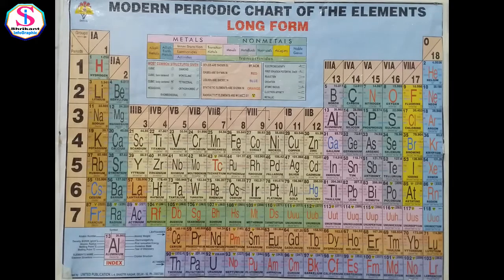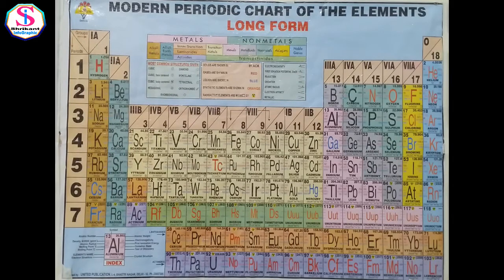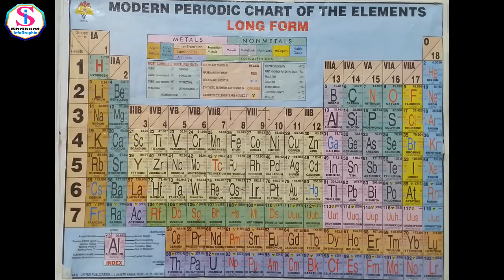Groups are numbered from 1 to 18, or zero group, and also named using Roman numerals such as 1A, 2A, 3B, 4B. Elements having the same number of valence electrons or the same outer electron configuration are placed in the same group. Elements in the same group show similar chemical properties.